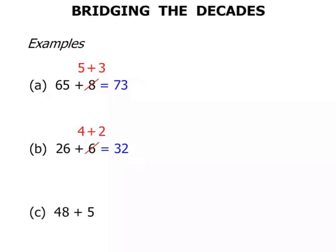The next one. 48 plus 5. Well, 48, we need 2 more to get to 50. So that 5 we're going to break it up and think of it as 2 plus 3. So we've got 48 plus 2, that's our 50. Plus another 3 is 53.